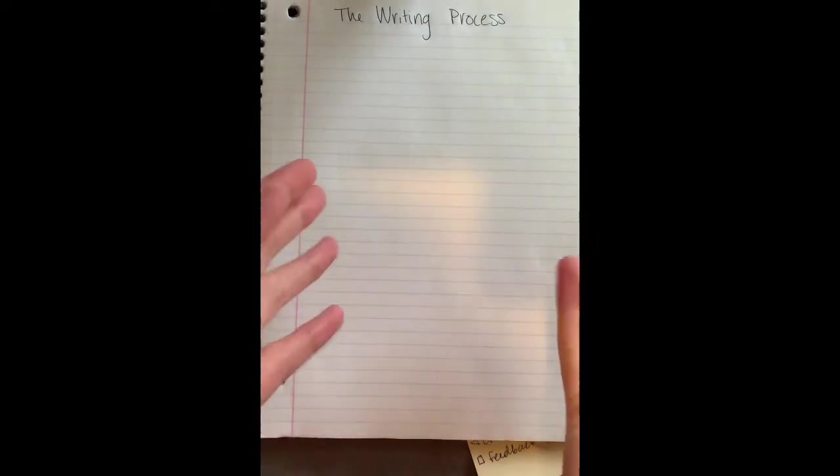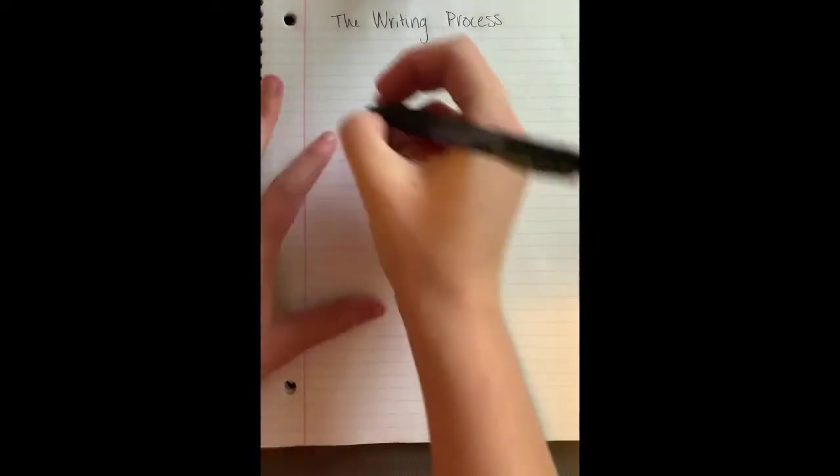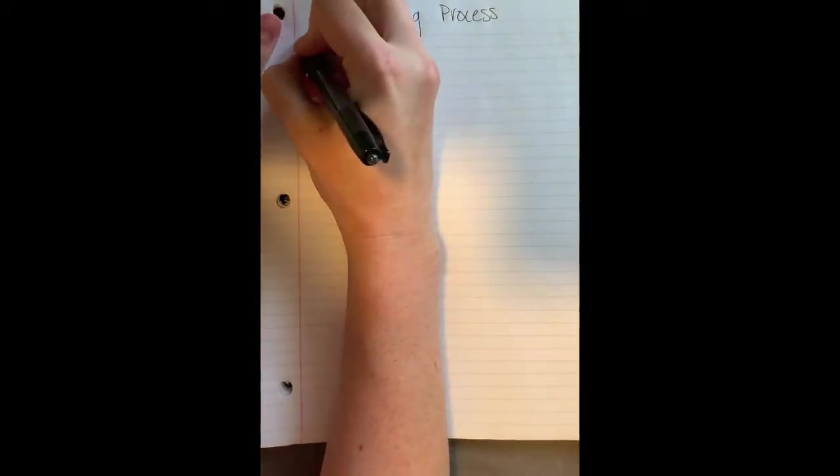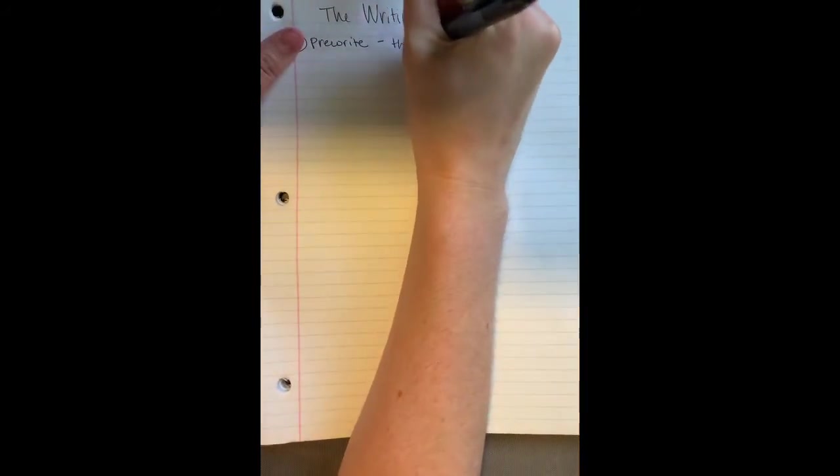The first thing you do when you write, you just start writing. You might have your ideas out there, but the first thing you do is you pre-write, right? And that's where you get your ideas out. You think about it. You brainstorm.